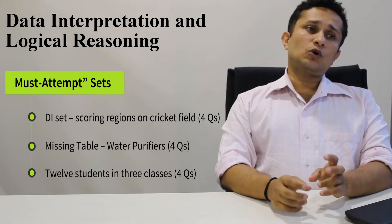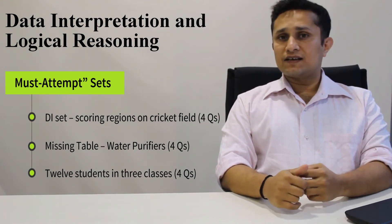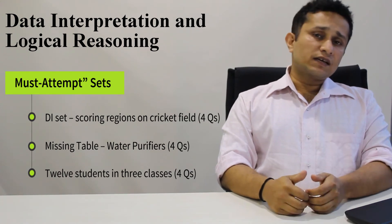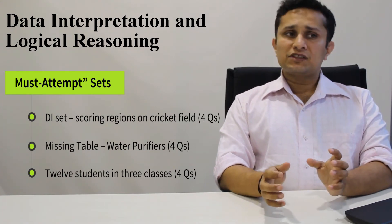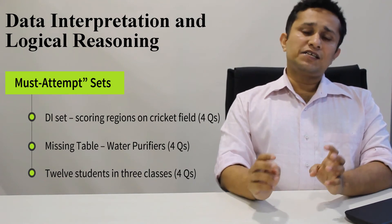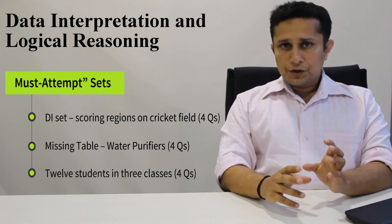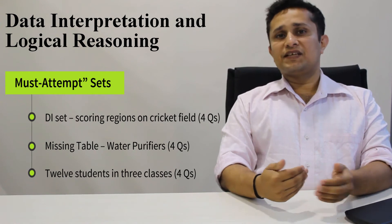Then there was one set on 12 students in 3 different classes, 10, 11, 12. This was again something that you should have attempted because it was one of those typical sets where if you got the answer or you made the final table, you would have been able to answer everything.